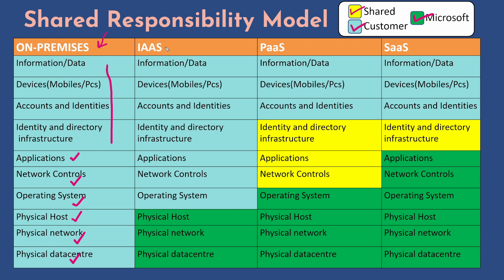When you move to IaaS, you do not worry about the physical infrastructure — physical data center, physical network, and physical host are taken care of by Microsoft. You focus on your operating system, your application, your network controls, and all those things. When you move to PaaS, Microsoft manages the physical aspects of the infrastructure and also manages your operating system. That is the main difference between IaaS and PaaS — in IaaS your operating system is managed by you, and in PaaS your operating system is managed by Azure.